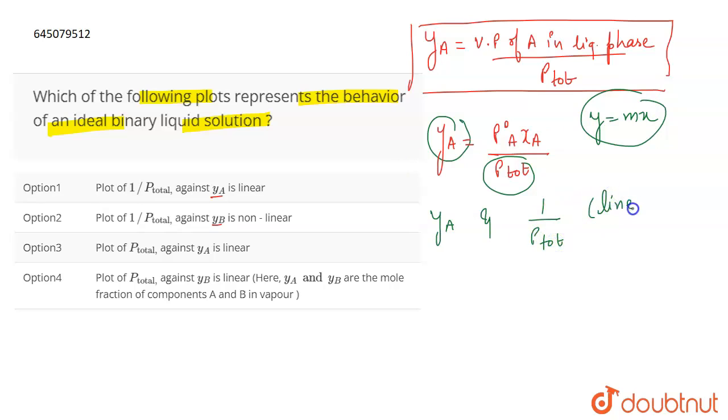So this is going to be a linear curve because it represents a linear equation where the slope is M. X is 1 by P total and Y is YA. So the plot between YA and 1 by P total is going to be a linear curve.